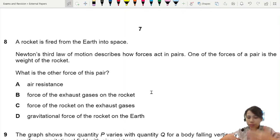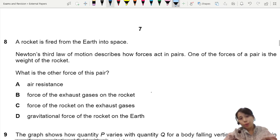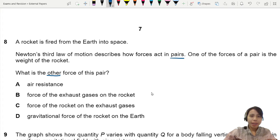A rocket is fired from Earth into space. Newton's Law of Motion describes how forces always act in pairs. One of the pair is the weight of the rocket. What is the other force pair?